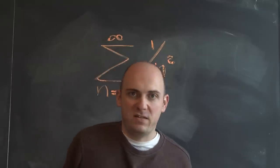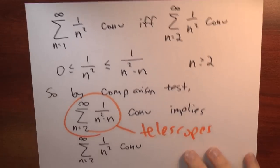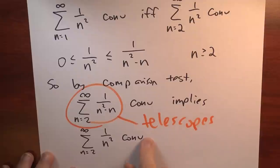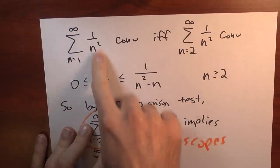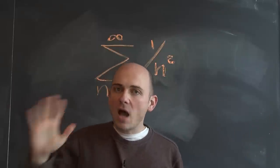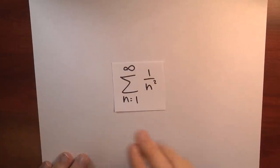Knowing that this series converges means that the sum of 1 over n squared, n from 2 to infinity, converges — and that means the original series, the sum of the reciprocals of the squares, converges. But that's not the only way to show this. I also want to apply Cauchy condensation to this series: the sum of 1 over n squared, n goes from 1 to infinity.